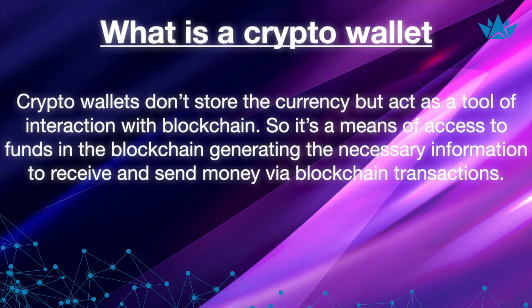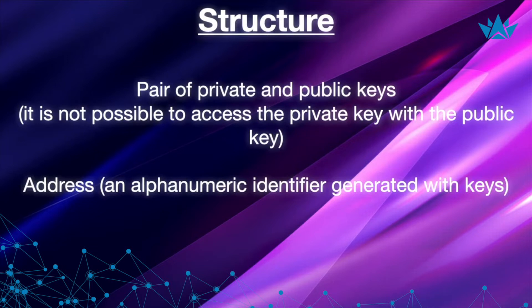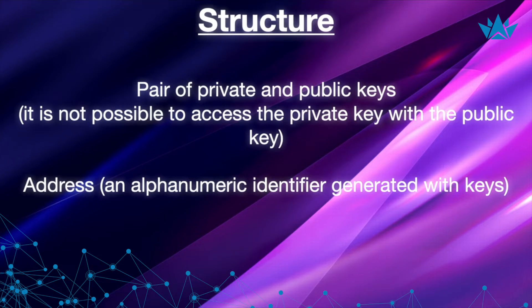I'd like to tell you about the structure — what crypto wallets consist of. First of all, the information comprises pairs of private and public keys. You don't need to get into the technical details of what a public key is, but you do need to take care of your private key. Based on these keys, an address is generated. The address is called an alphanumeric identifier — it's an external address that specifies the location to which coins can be sent on the blockchain.